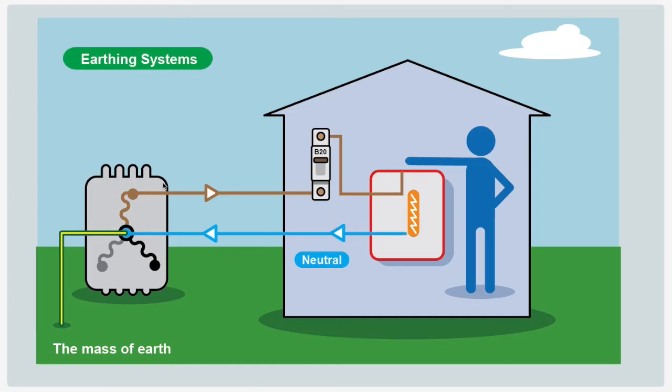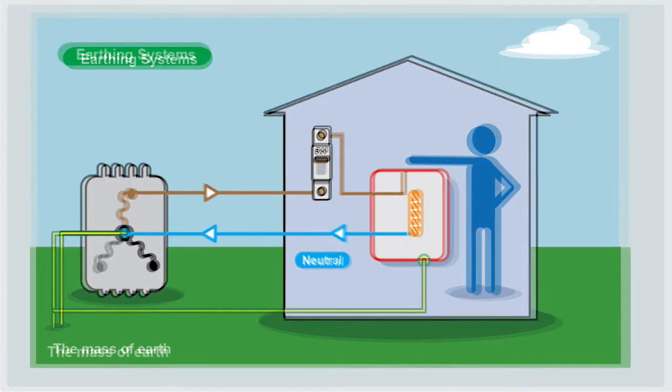So what's going to happen now? We haven't got a short circuit current, so this device won't operate. This case is just going to sit live. This is why we need to introduce other protective measures to protect this chap.